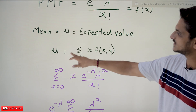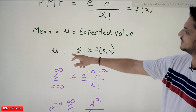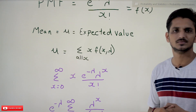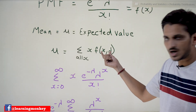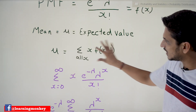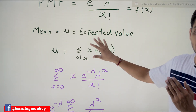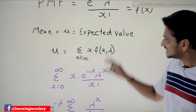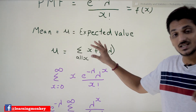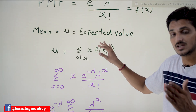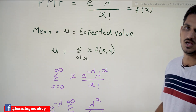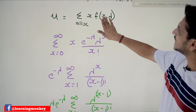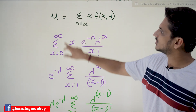The mean value, mu, is given as Σ x · f(x) over all x. This is how we find the mean or expected value for discrete probability distributions — a concept we already discussed at the beginning of the discrete probability distributions section. Now, substituting the probability mass function here: Σ (x=0 to ∞).